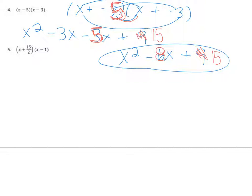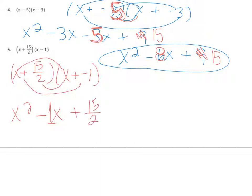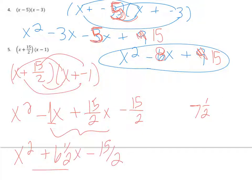Let's try this last one. Rewrite it if you need to. You have x plus a negative 1. First is x squared, outer would be minus x, inner is plus 15 halves x, and last is minus 15 halves. Collect the middle. 15 over 2 is the same as 7 and 1 half. If I have negative 1 plus 7 and 1 half, that gives me 6 and 1 half x.